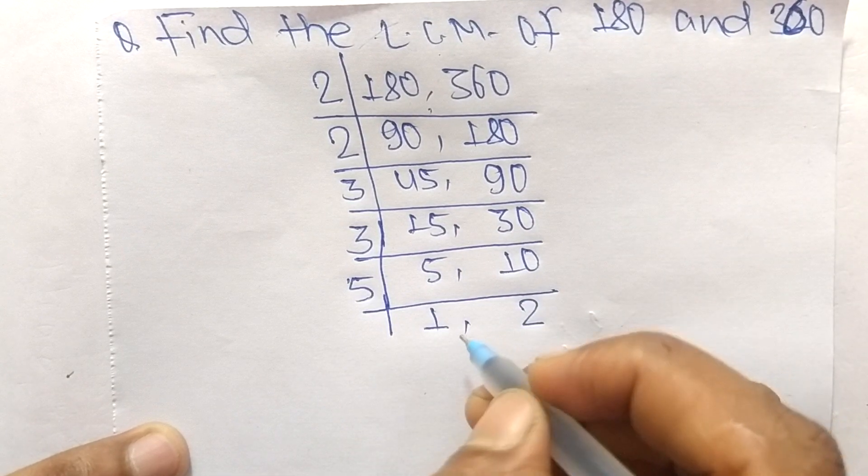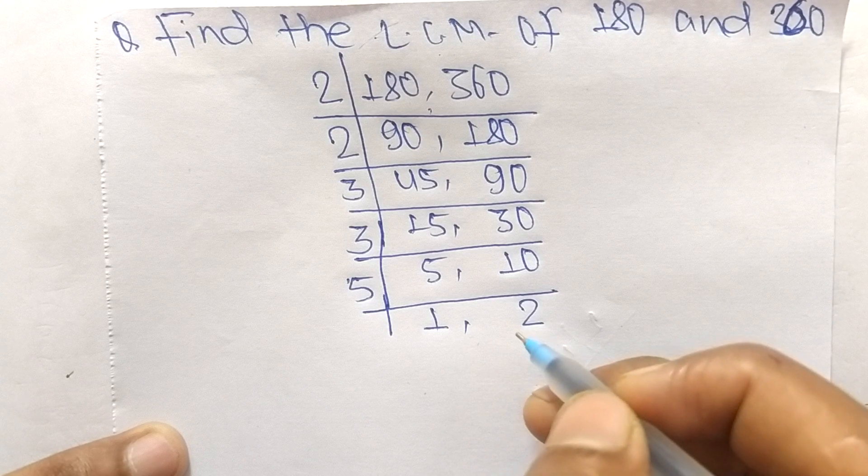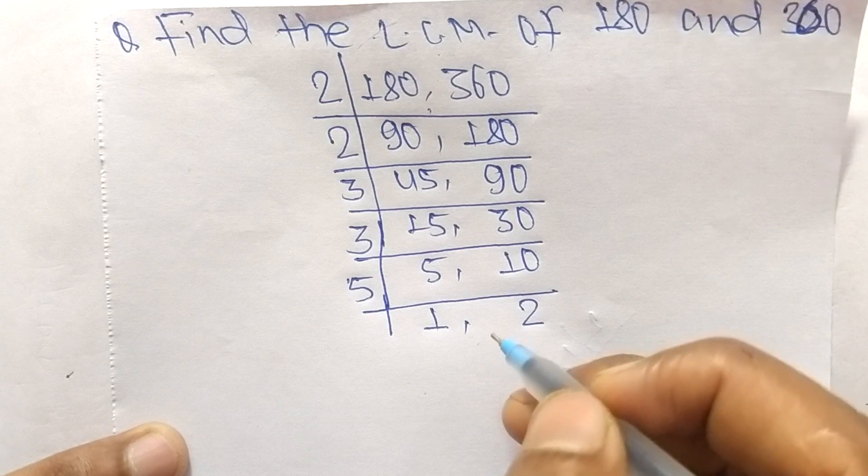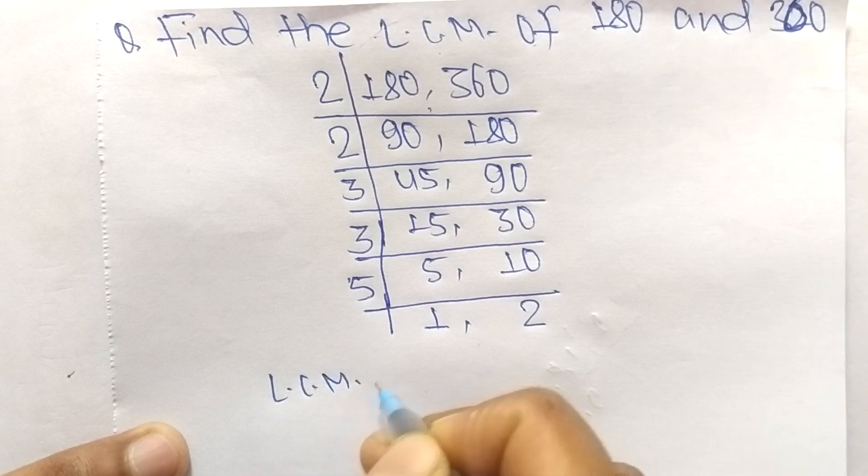At last we have 1 and 2 which are not exactly divisible by the same number. So the LCM is equal to, from this part, we have 2 times 2 times 3 times 3 and 5.